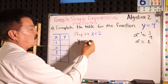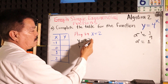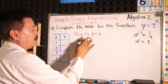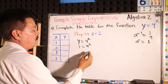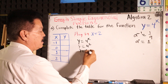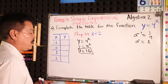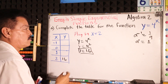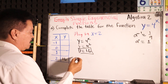Y equals 4 to the 2nd power. So y equals 16. We have this point: 16. Just follow the formula — very simple.